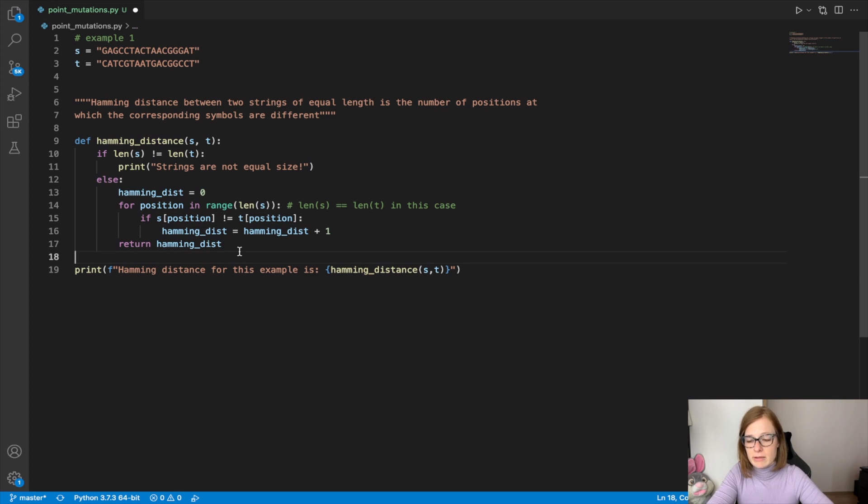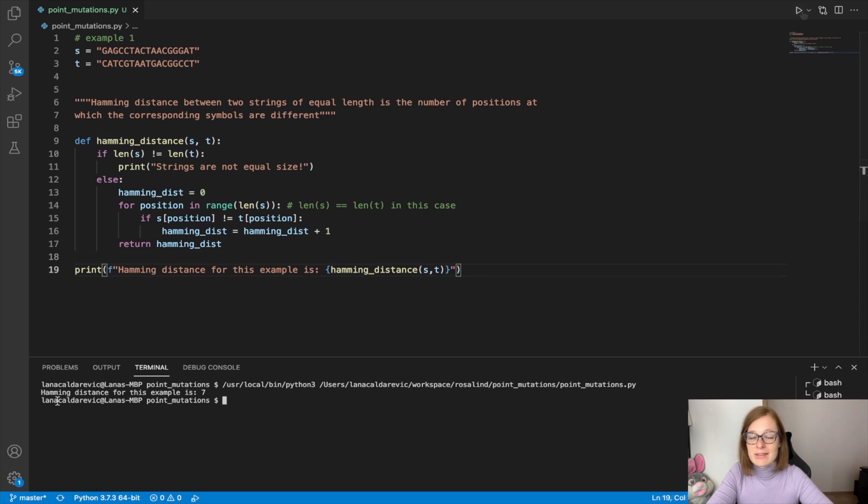So let's run this implementation and check that actually what we implemented is correct and that this function gives us back seven. So we see that the Hamming distance for this example is seven. So that's great. Our implementation is correct.